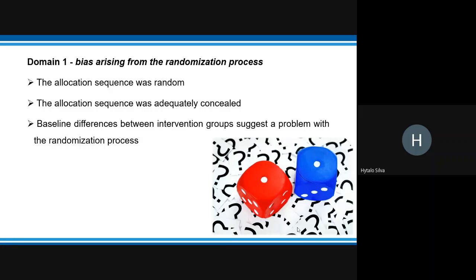Domain 1: The allocation sequence was random. The allocation sequence was adequately concealed. Baseline differences between intervention groups suggest a problem with the randomization process.